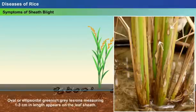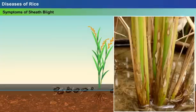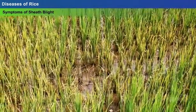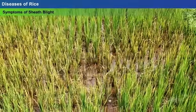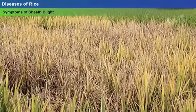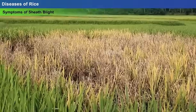Symptoms of sheath blight: initially, oval or ellipsoidal greenish-gray lesions measuring 1–3 cm in length appear on the leaf sheath close to the soil or stagnant water. Later, the lesions enlarge, turning into greyish-white centres surrounded by dark brown margins. Gradually, the lesions increase and spread to the upper part of the sheath and to the leaves, finally killing the entire plant. The infection spreads easily to neighbouring tillers when they come in contact with the infected leaves.